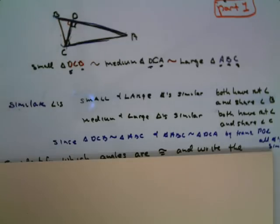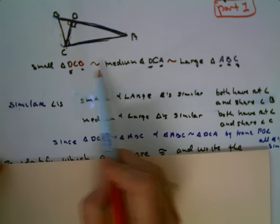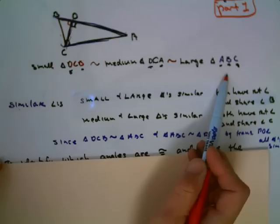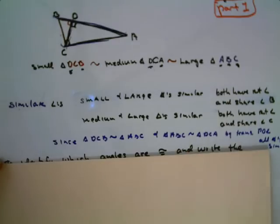But before we do that, let's talk about how could I write, because this similarity statement doesn't really work. We don't have our corresponding parts similar. So how would I write a similarity statement and show the correct corresponding angles? So we have to put the congruent angles together.